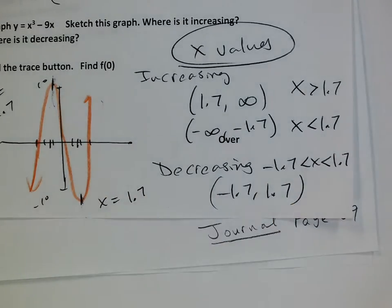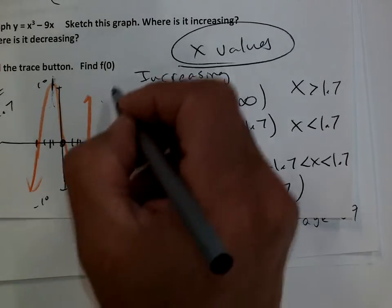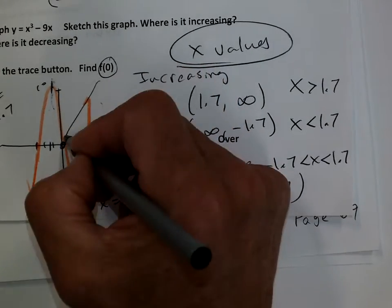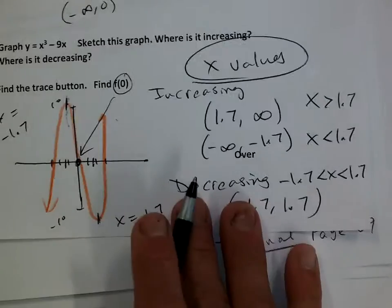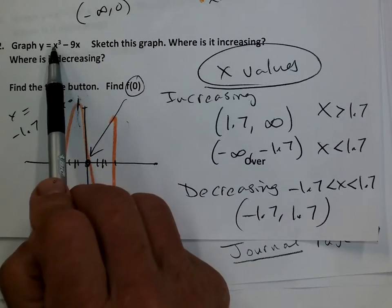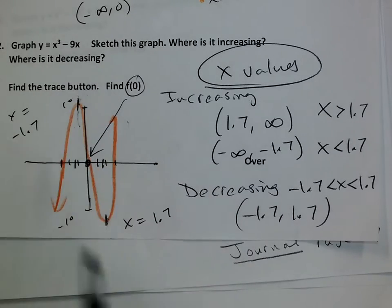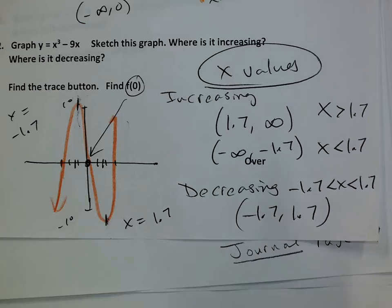This is hard, but we can do it. F of 0 is right there, so f of 0 has to be 0. If you plug in 0, you get 0. Increasing, decreasing — all right.